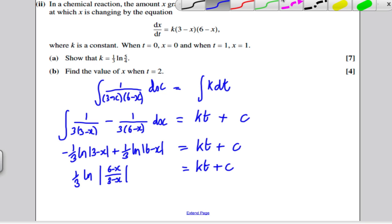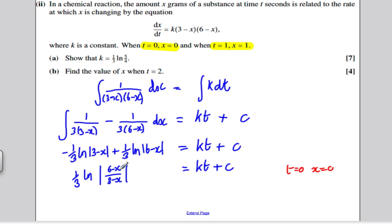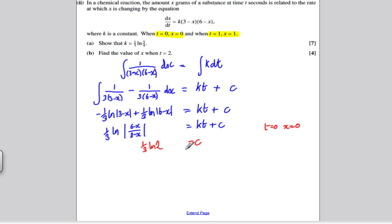Now I've got some boundary conditions here, t is 0 when x is 0, and t is 1 when x is 1, that I can substitute in to work out the constants c and k. So let's do that with a different color pen. I know when t is 0, that x is 0. So putting in x is 0 here, I just get a third ln 2. And putting in t=0 here, this disappears, so I get that is equal to c. So I've worked out my first constant.